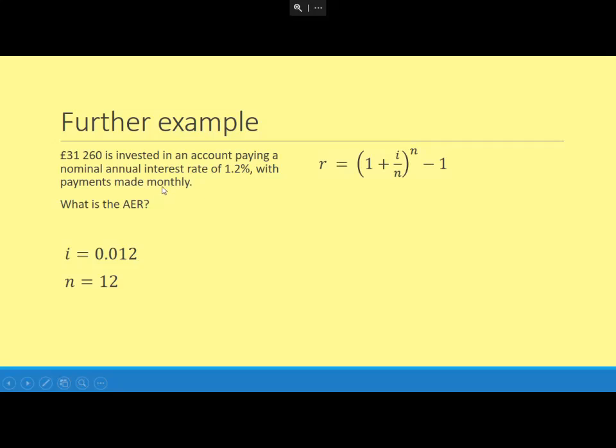So we need a couple of things here. We're trying to work out R, the AER, so we don't know that. But we do know that n—that's the easy one—how many compounding periods are there over the year? Well, it's being paid monthly, so there'll be 12 of those. The i, so the interest rate of 1.2%, and remember it needs to be expressed as a decimal: 1.2% is 0.012 as a decimal. Then you can just chuck it into the formula, replace the i with 0.012, replace both of the n's with 12 for this one.